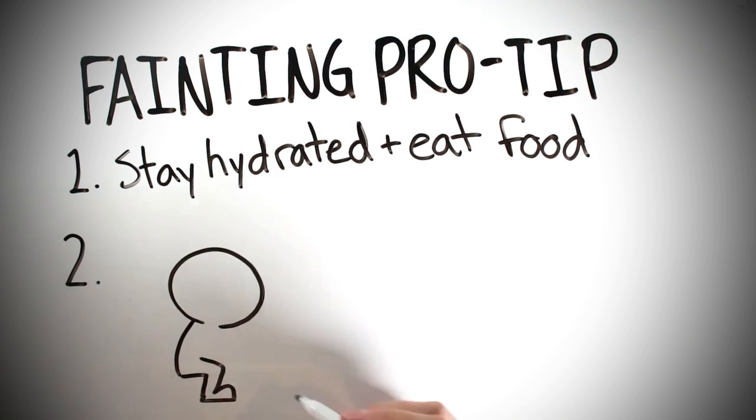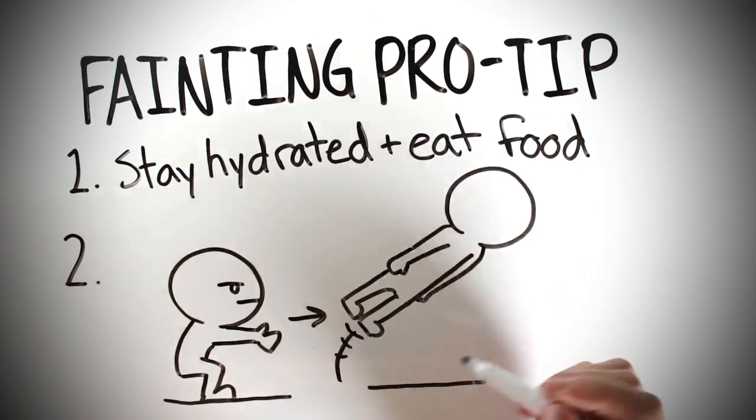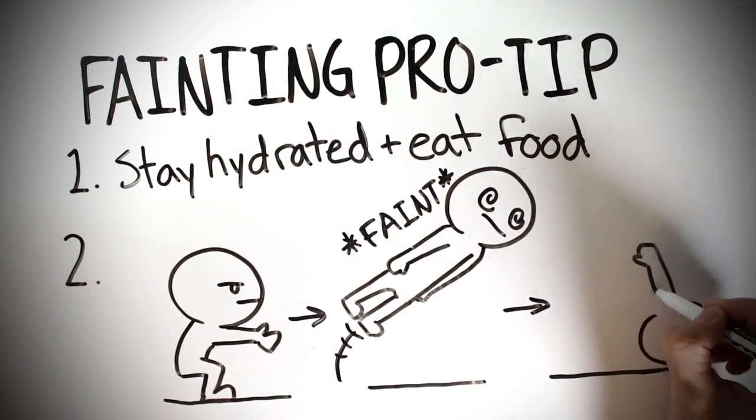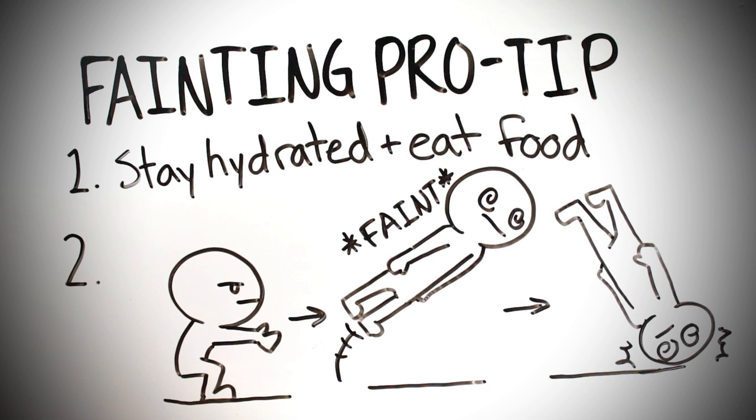Alternatively, if you want to get the worst possible head injury from fainting, the technique would be to jump in the air so that you lose consciousness while in mid-air, and then there will be no way to stop your head from hitting the ground in the most damaging way possible. Thanks for watching!